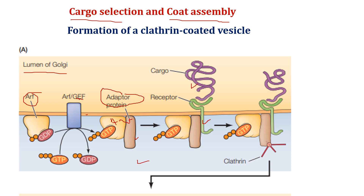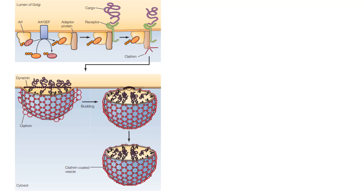Cargo proteins bind to the receptor. The adapter proteins then recruit clathrin, which initiates assembly of the vesicle coat. Clathrin plays a structural role in vesicle budding by assembling into a basket-like lattice structure that distorts the membrane and initiates the bud. The budding vesicle is then pinched off by dynamin, a large GTP-binding protein that assembles into a helical polymer, which constricts — driven by GTP hydrolysis — to promote membrane fission at the neck of budding vesicles, forming the clathrin-coated vesicle.